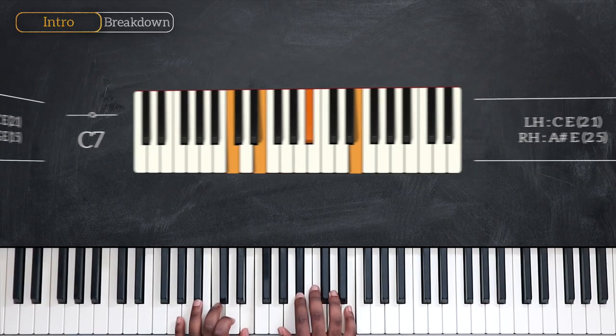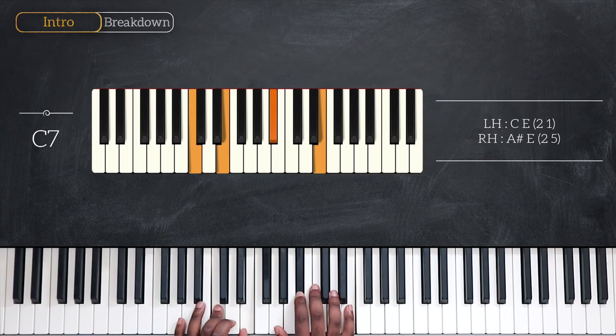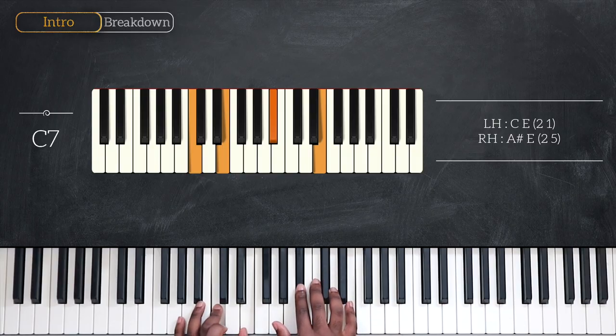Then we have C7, simply changing the G to a B♭ or an A-sharp.